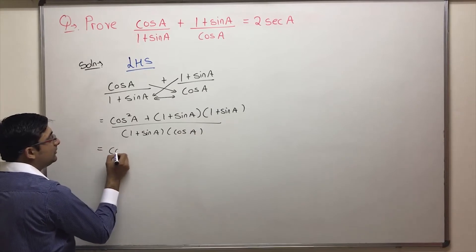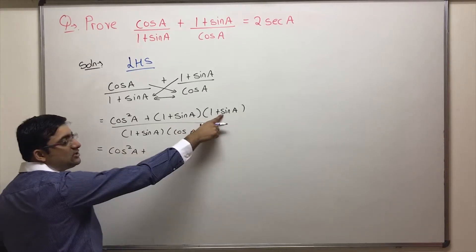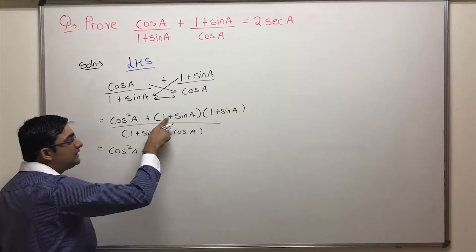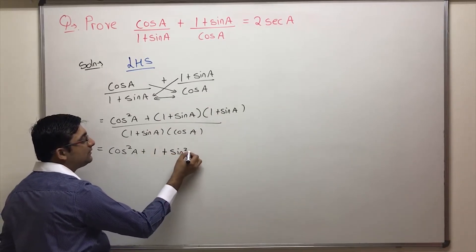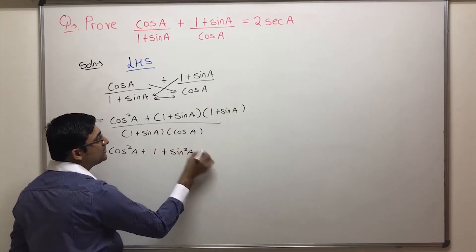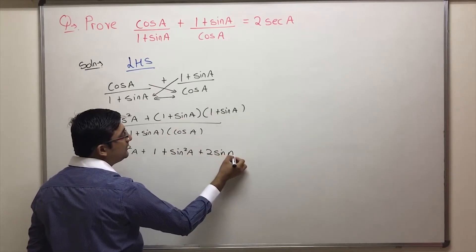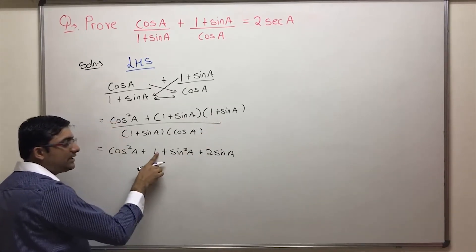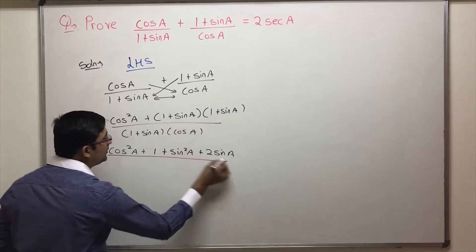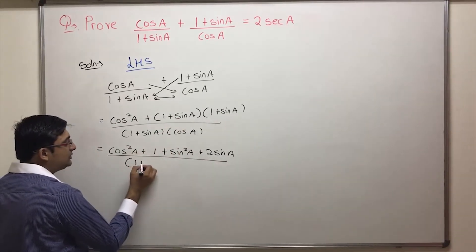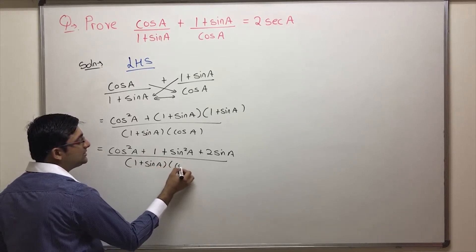So this is equal to cos squared A plus (A plus B) whole squared, that is A squared plus B squared plus 2AB. So we get 1 plus sin squared A plus 2 sin A, upon 1 plus sin A into cos A.